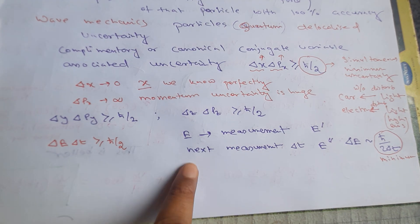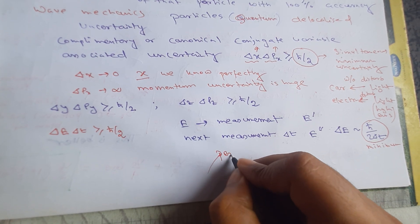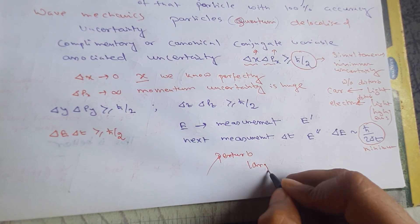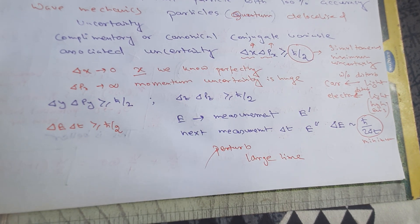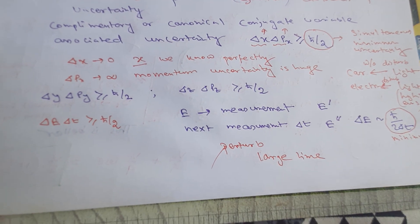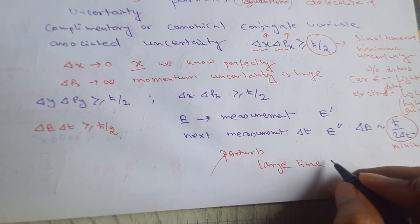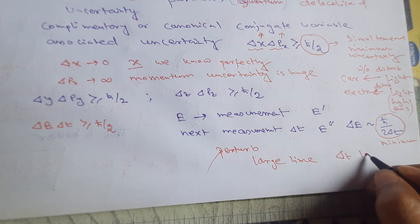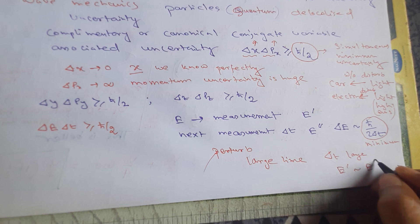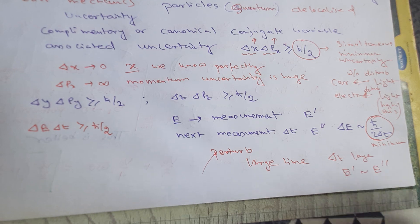Why does this happen? Because when you measure the energy of a system, you perturb the system, and it takes a large time for the system to come back to its initial state. If delta t is large, then E prime will tend toward E double prime — the two measurements will agree. But if delta t is small, there will be this minimum uncertainty associated with the measurements.